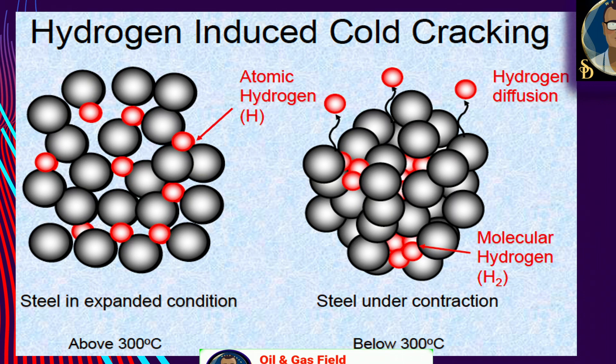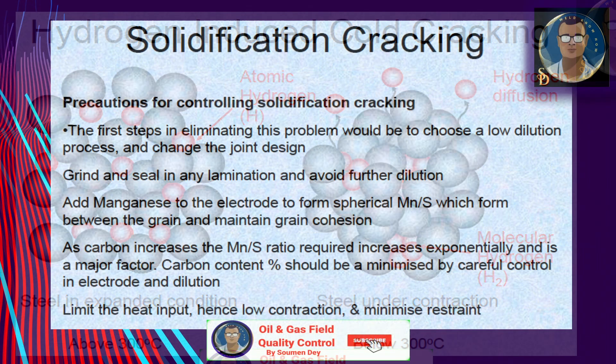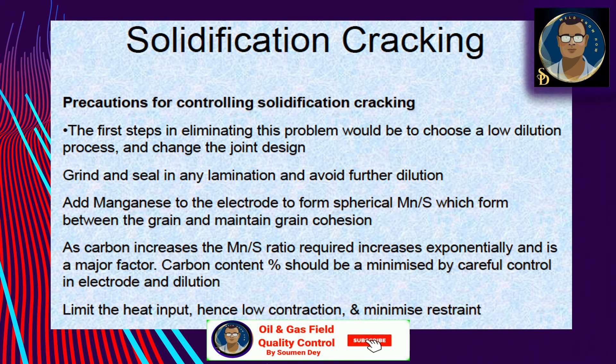Clean rust from the joint to avoid hydrogen contamination from moisture present in the rust. Reduce residual stress by blending the weld profile to reduce stress concentration at the toes of the weld.